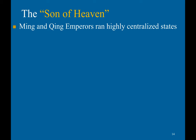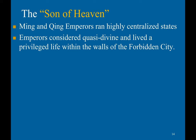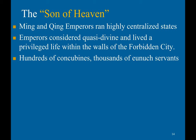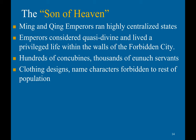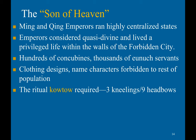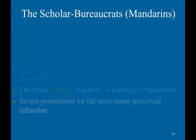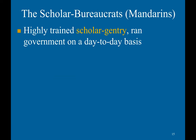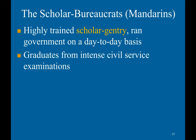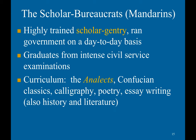Ming and Qing emperors ran highly centralized states. Emperors were considered quasi-divine and lived a privileged life within the walls of the Forbidden City, with hundreds of concubines and thousands of eunuch servants. Clothing designs and named characters were forbidden to the rest of the population. The ritual kowtow required three kneelings and nine head bows to meet the emperor, and severe punishment was enacted for the most minor perceived infractions. The Mandarins were highly trained scholar-gentry who ran the government on a day-to-day basis. The curriculum encompassed the Analects, Confucian classics, calligraphy, poetry, essay writing, and the history of literature.